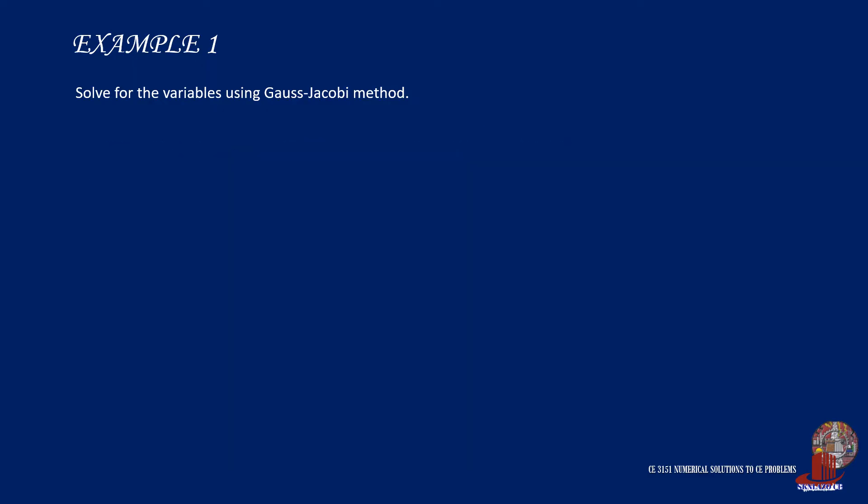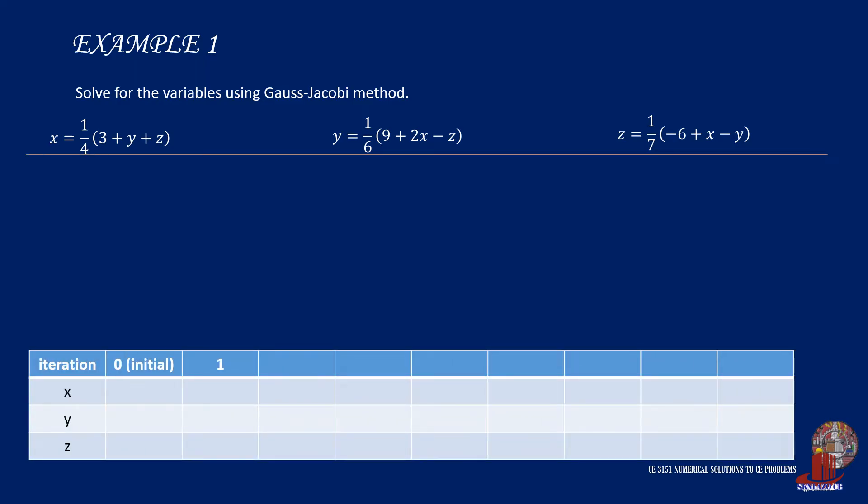Let's start the iteration by placing the three equations in a manner easy to iterate. Then we assume initial values of x, y, and z for iteration zero. We are going to use zero as our initial value for the variables. Now we continue with x sub 1 as one-fourth of 3 plus y, which is zero, and z also as zero, so we get 0.75.